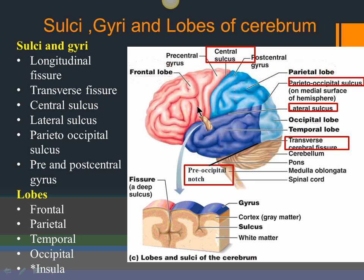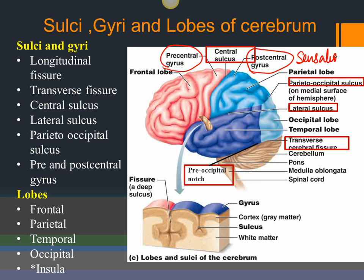Two important gyri are on either side of the central sulcus. In front of it is the pre-central gyrus, which belongs to the frontal lobe. Behind it is the post-central gyrus, which belongs to the parietal lobe. The post-central gyrus processes general sensations such as touch, temperature, pain, and pressure — sensory impulses go towards the central nervous system and are processed here.